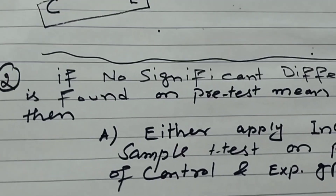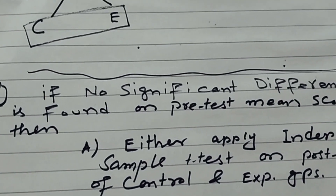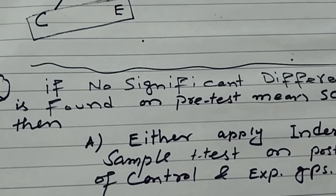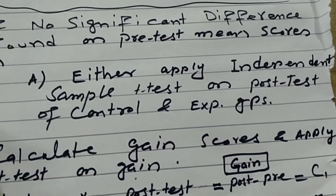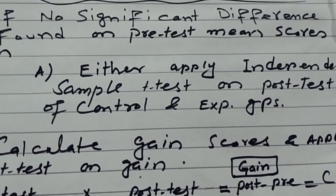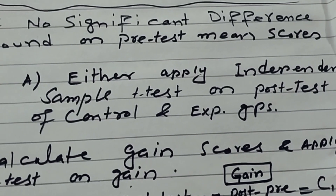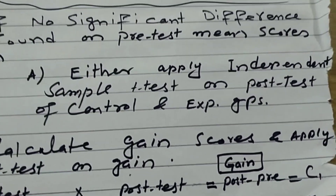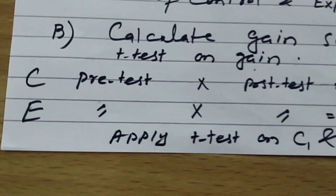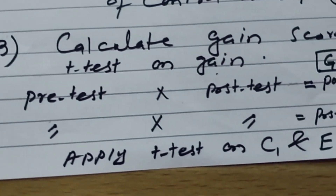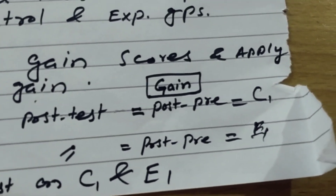The other situation is if no significant difference is found on the pre-test. For example, if you applied a t-test on the pre-test scores and decided that no significant difference was found, then there are two options. Either you take the post-test scores of the control and experimental groups and apply an independent t-test directly, or you calculate gain scores.